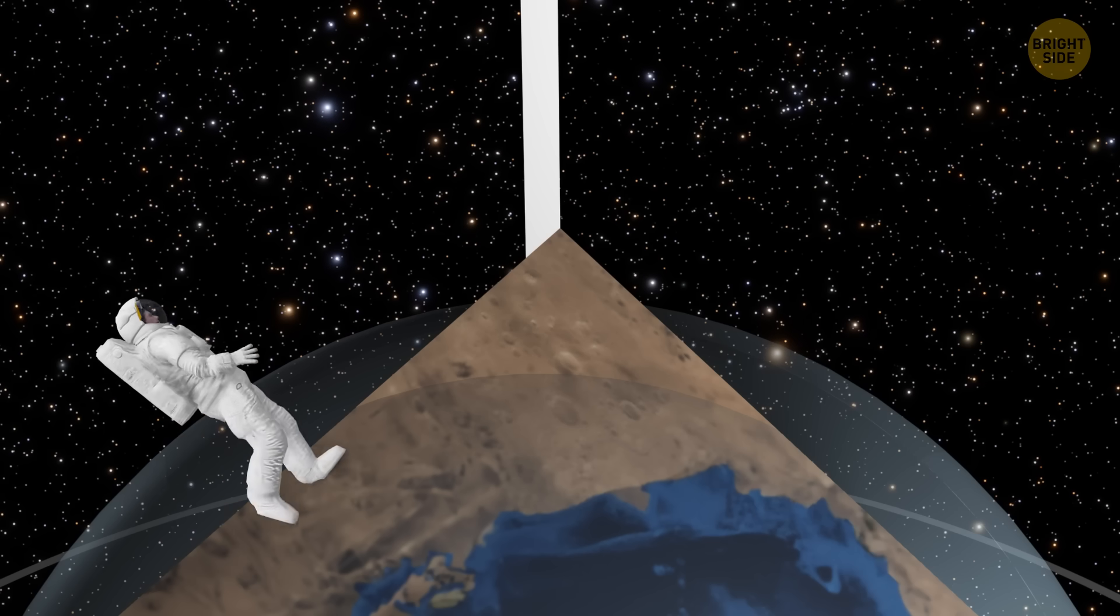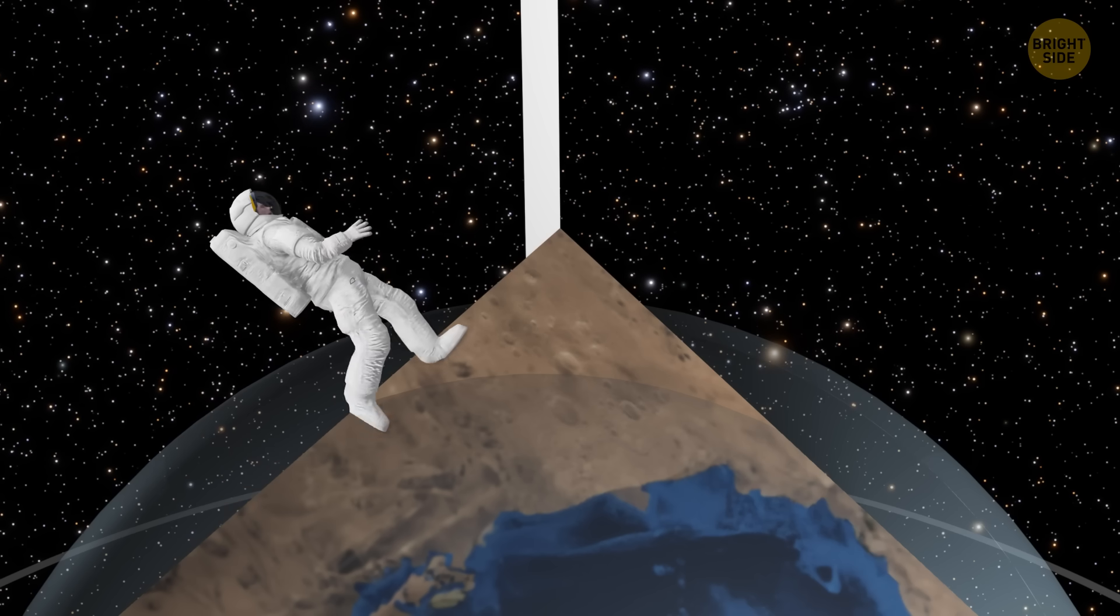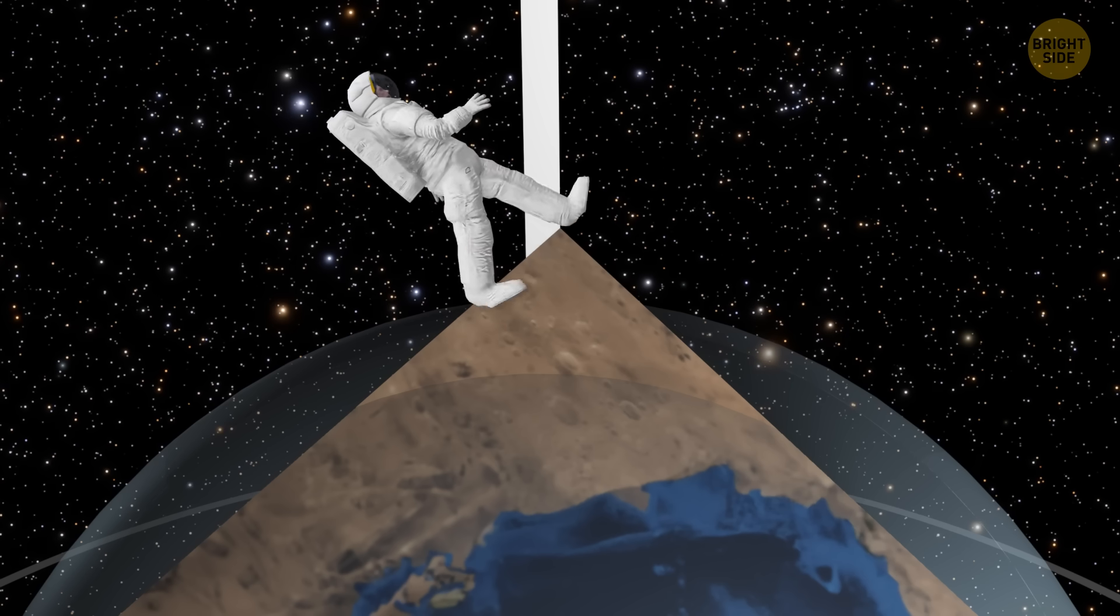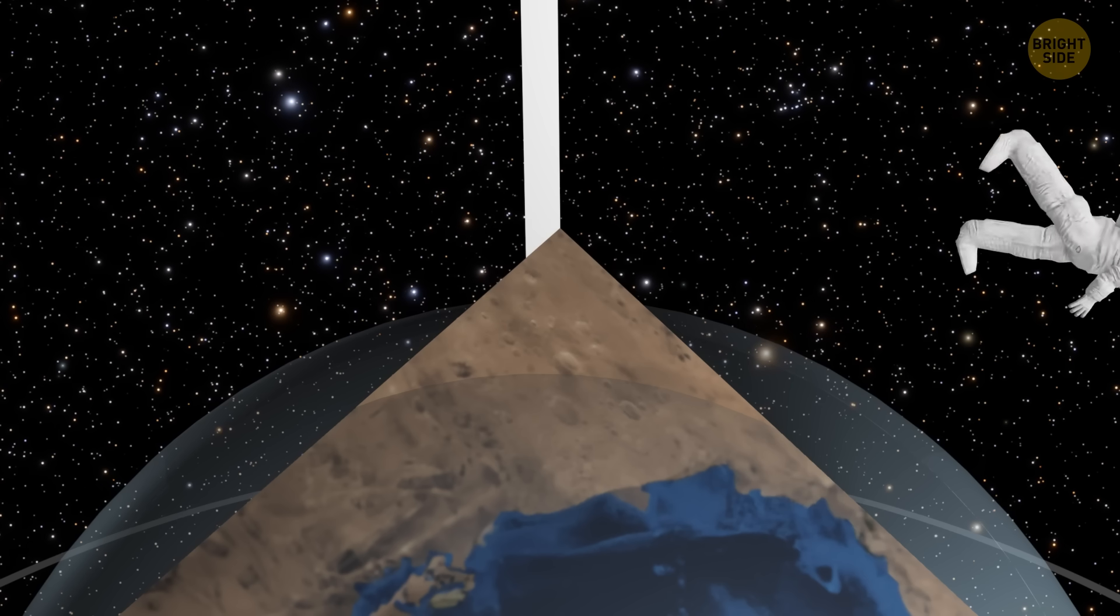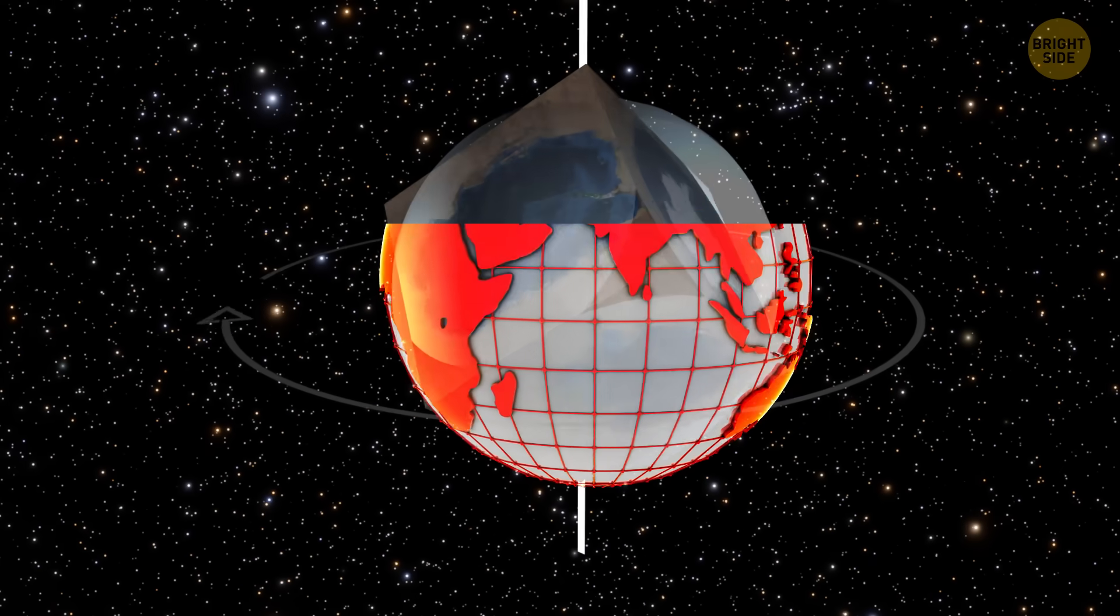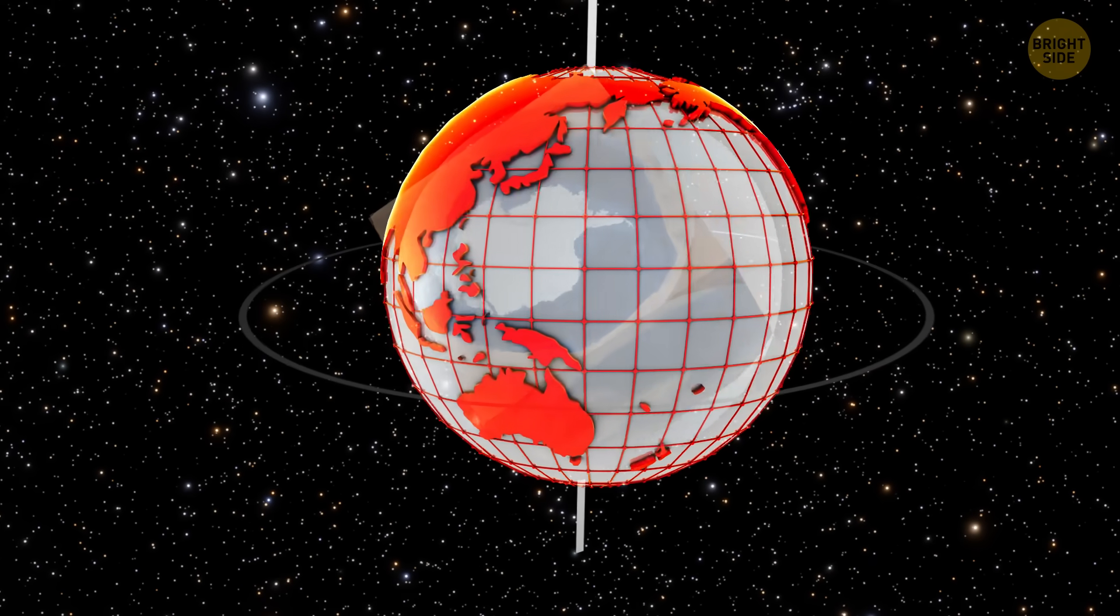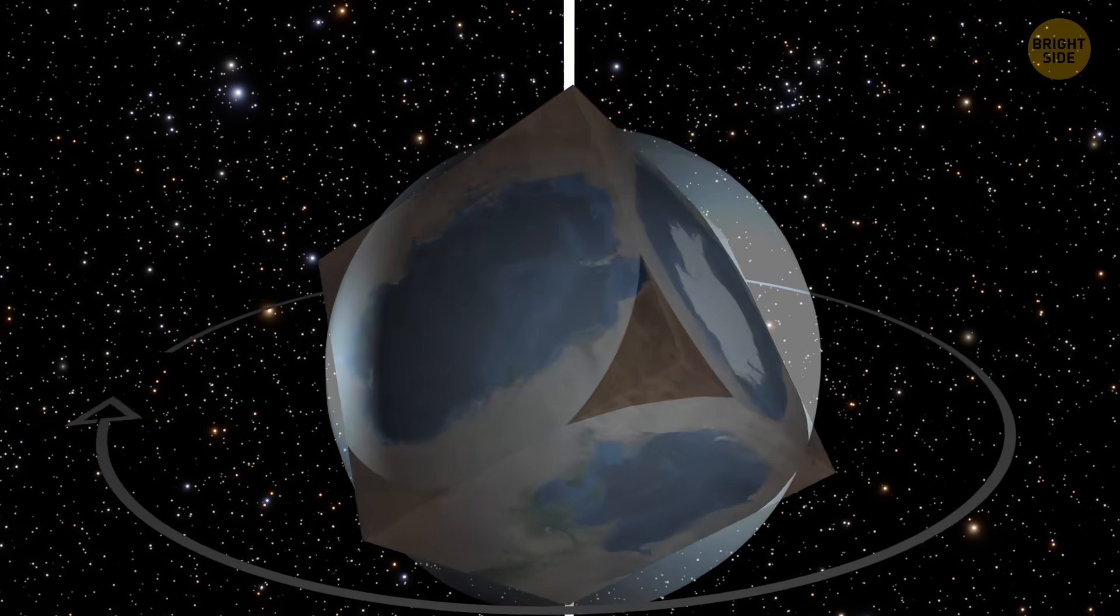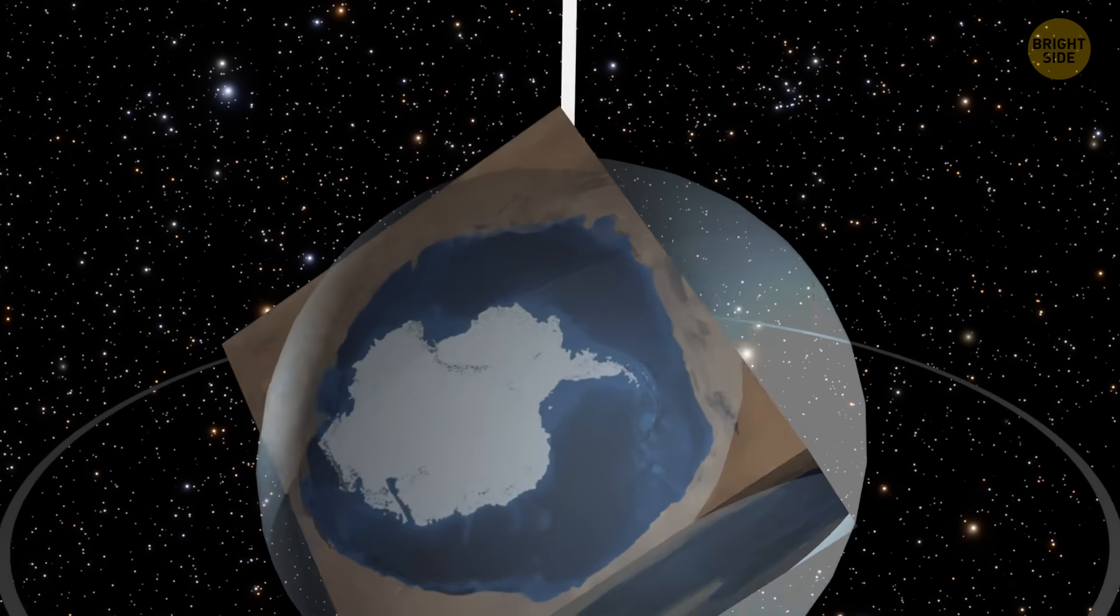Since the atmosphere is held down by gravity, and gravity would now be pulling towards the center of each face, the atmosphere would be thicker there and thinner towards the edges. If the cubic Earth had the same volume as our round world today, its sharp corners would poke out beyond our atmosphere, creating unprotected and uninhabitable areas.